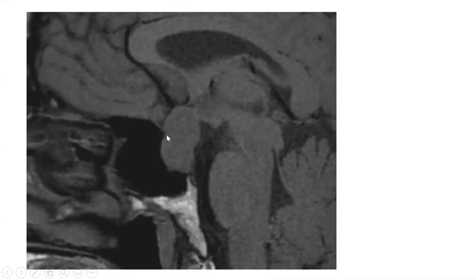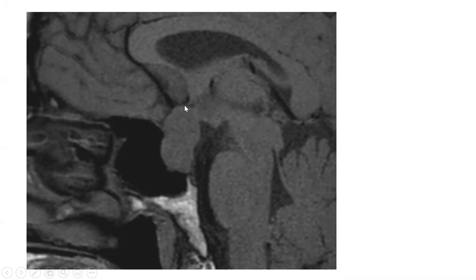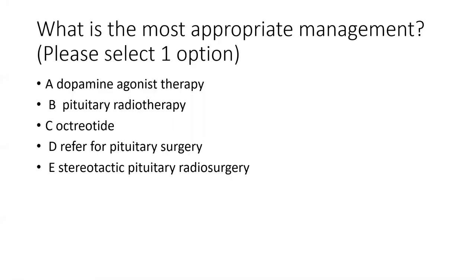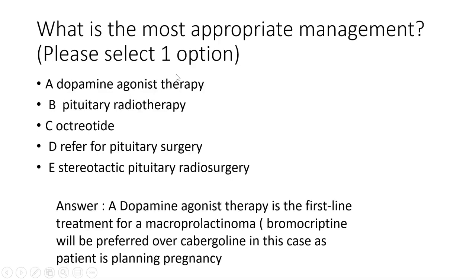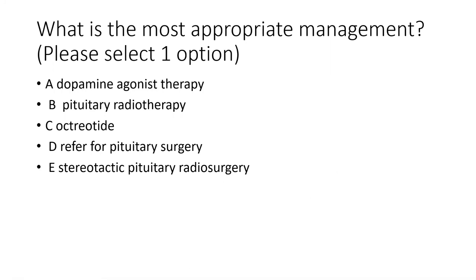Here you can clearly see there is a mass arising from the region of the sella, basically expanding the sella and extending into the sphenoid sinus. It is also extending up to the suprasellar region and abutting the optic chiasm. Based on this — a high prolactin with this macro adenoma — what is the most appropriate management of this patient?